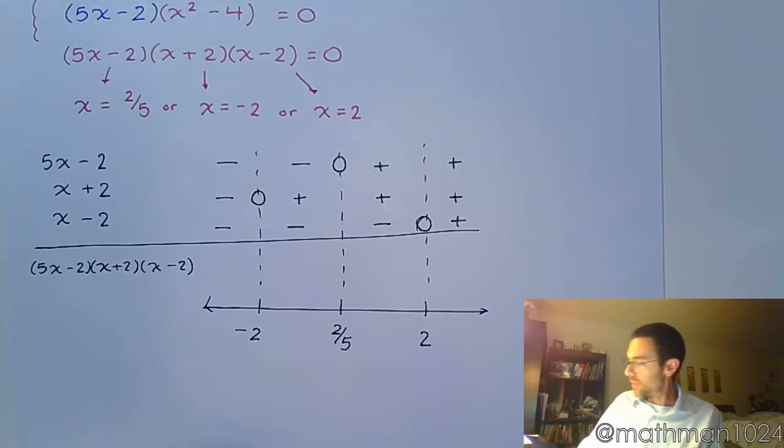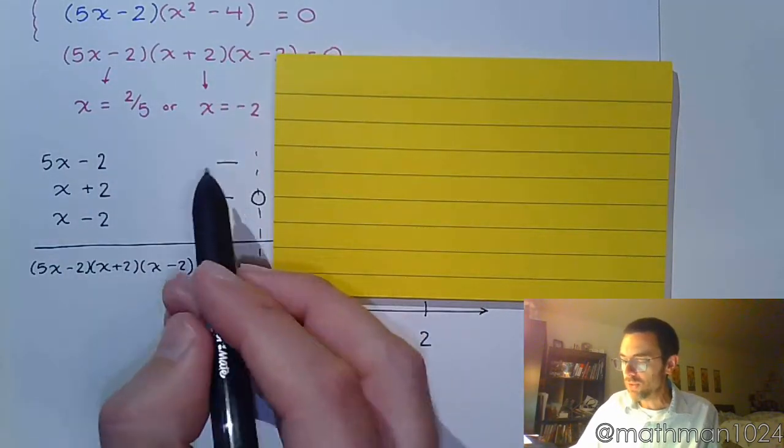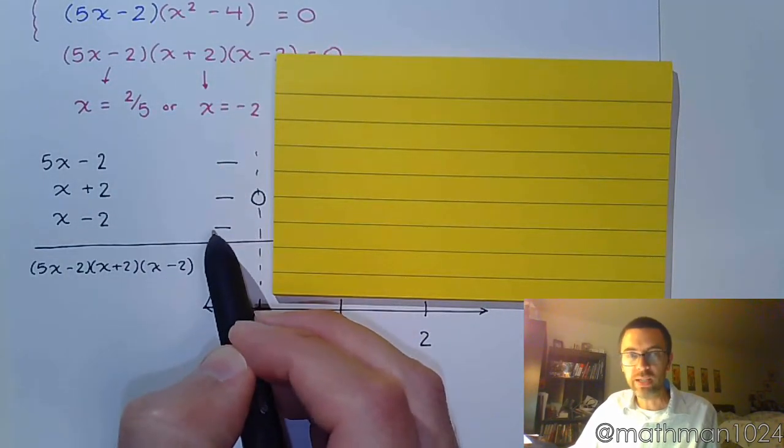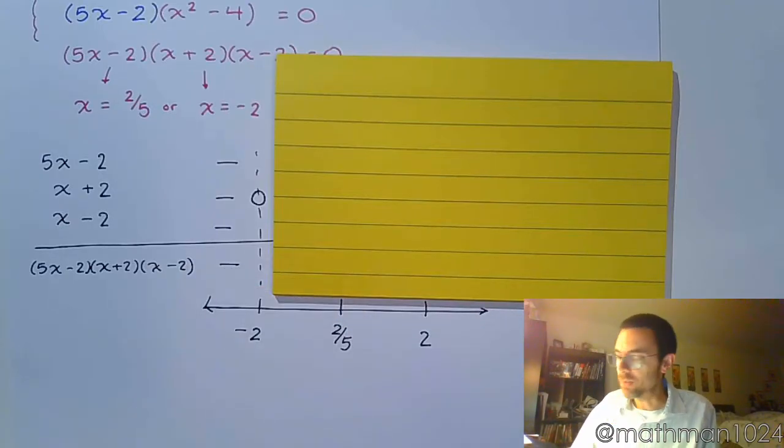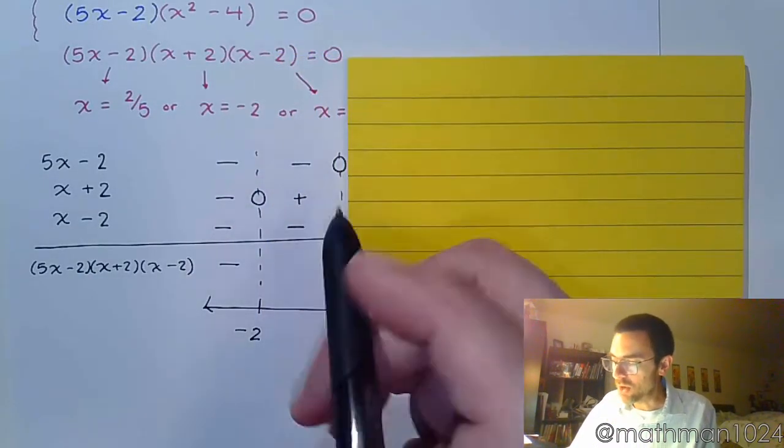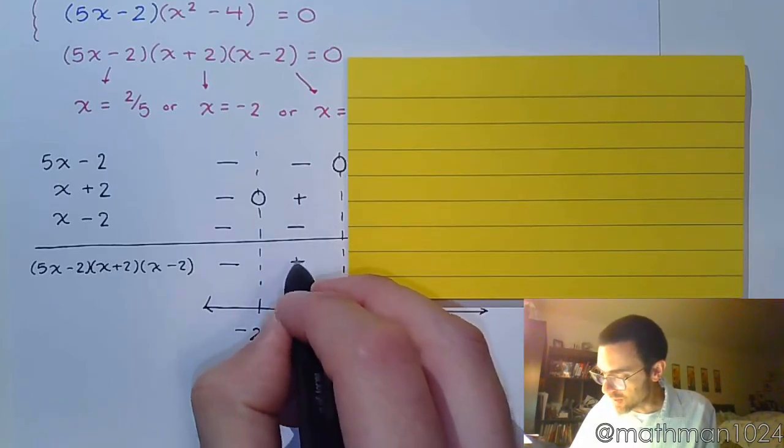Alright, so now each section, let's talk about what we have. In this first section, you have three negative factors, which means this guy's going to be negative in that region. And then over here, you have two negative factors and a positive, so you end up with a positive.